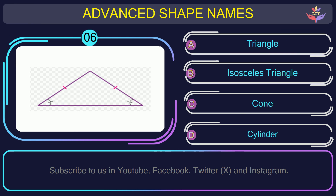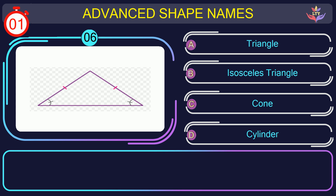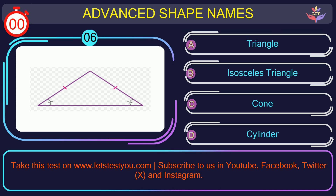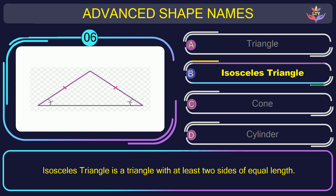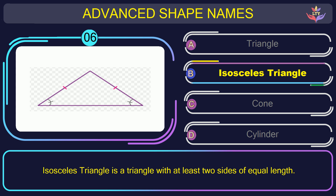Question number six. Can you name the shape you see in this picture? The correct answer is option B. Isosceles triangle. Isosceles triangle is a triangle with at least two sides of equal length.